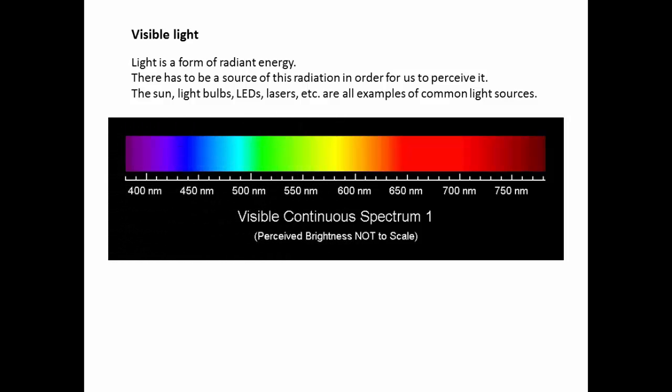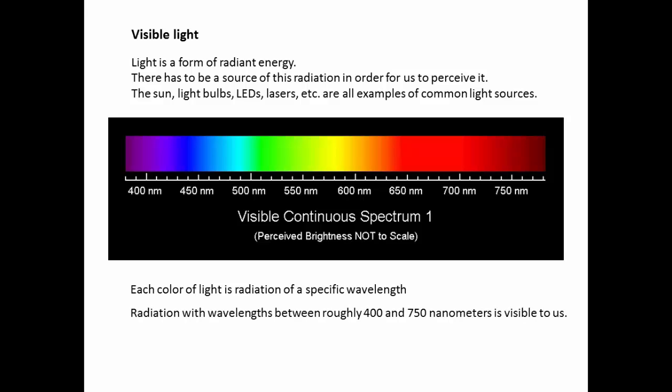Here is the continuous visual light spectrum. Each color of light is actually radiation of a specific wavelength. If we look at the scale, we see that it is pretty much between 400 and 750 nanometers. That's the unit of measurement for the radiation.